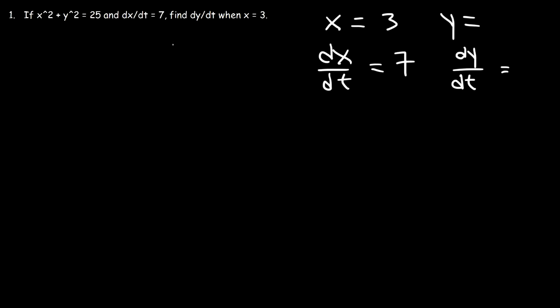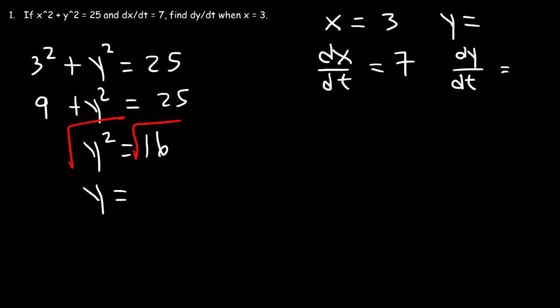So let's calculate the value of y first using this equation. So x squared plus y squared is 25. Let's replace x with 3, and let's solve for y. 3 squared is 9. And 25 minus 9 is 16. Now, we need to take the square root of both sides. The square root of 16 is 4. Now, it can be positive 4, or it can be negative 4. So we have two possible answers. So I'm going to put plus or minus 4.